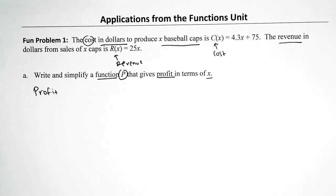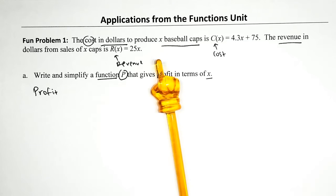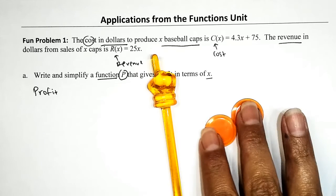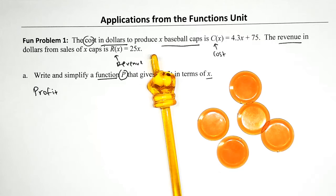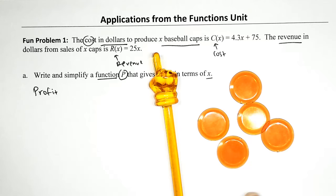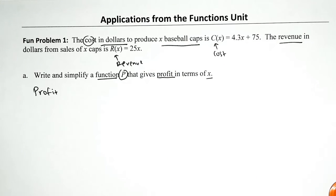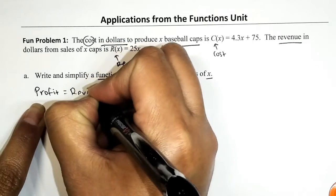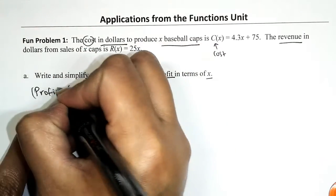Let me do a quick example. I'm selling magic fingers — they cost me $2, but I sell them for $5. So how do I calculate my profit? I take the revenue, which is the money we take in, and subtract from it the cost. So $5 minus $2 gives me a profit of $3. To calculate the profit we take the revenue and subtract from it the cost.